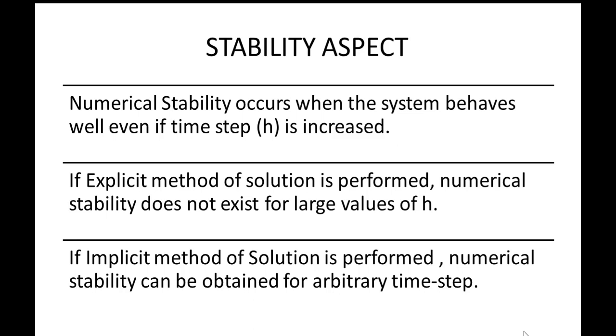And when we do that, this explicit method of solution does not give us a stable result. In that case, the implicit method of solution is performed, and implicit method of solution gives very good results even at arbitrary time step. Suppose you have a random manner in which you have broken the time step, even then you will get very good numerical stability. So that is the reason why we use this explicit and implicit method, because if one method was sufficient, the other method wouldn't have come up. So this is the logic behind stability aspect and the usage of these two different methods for solution.